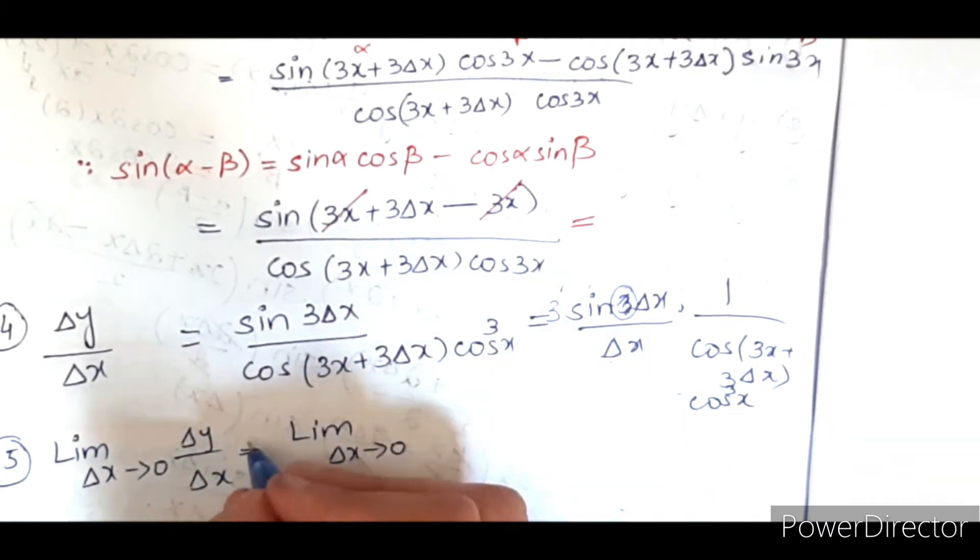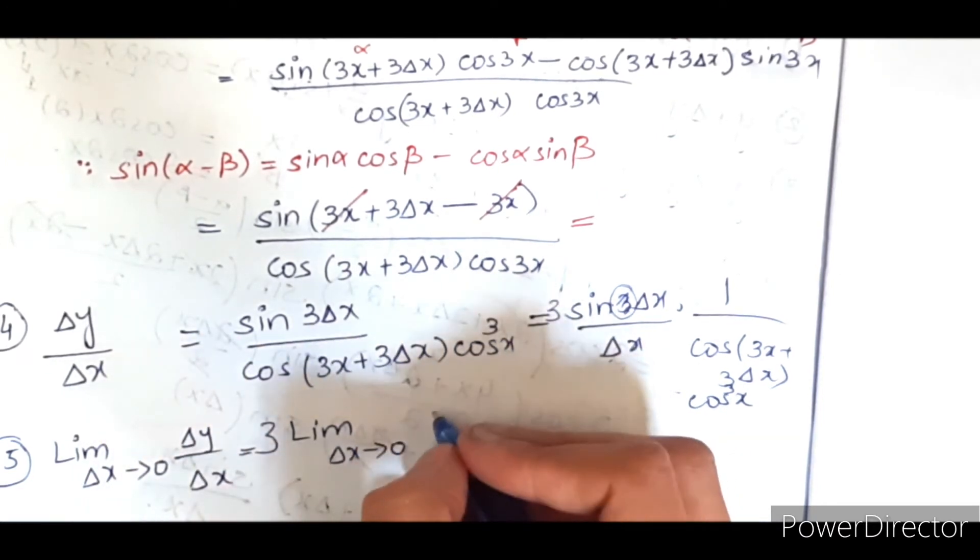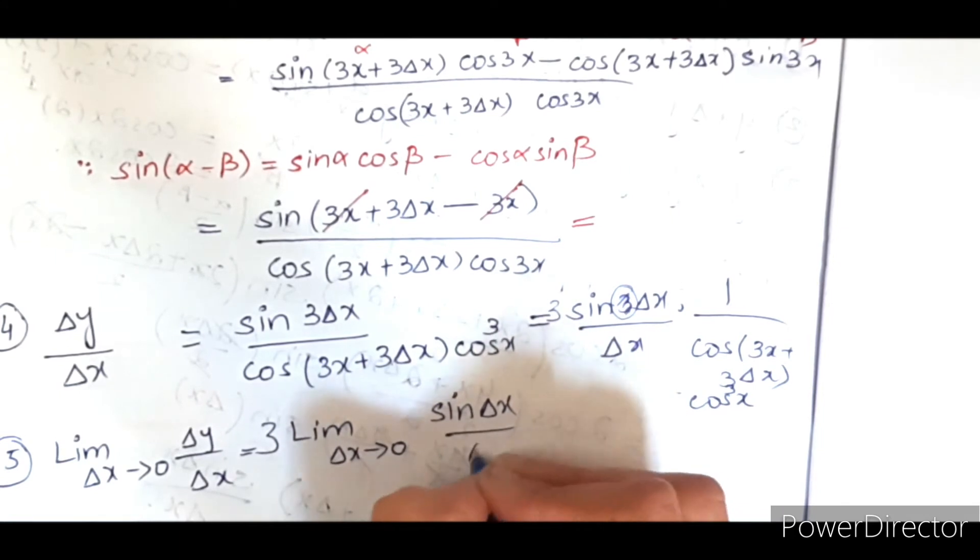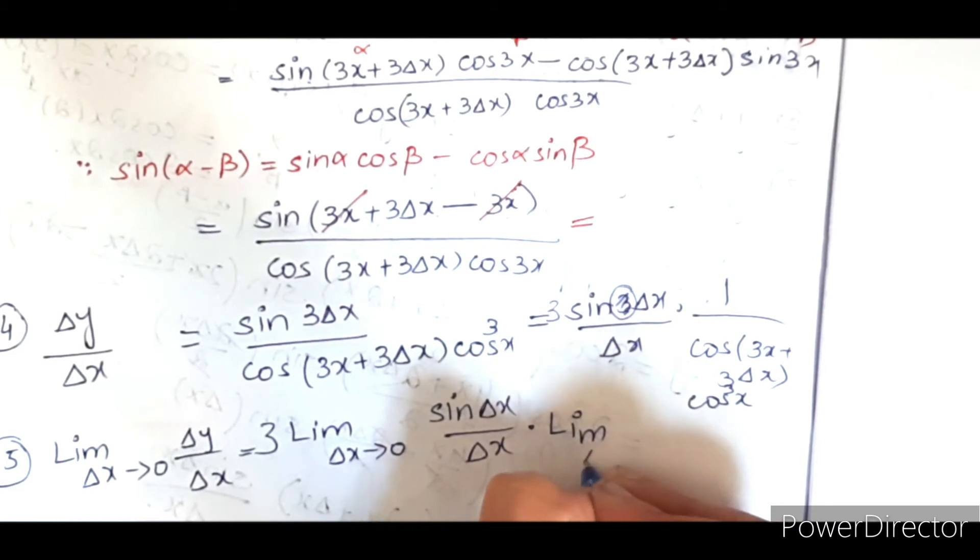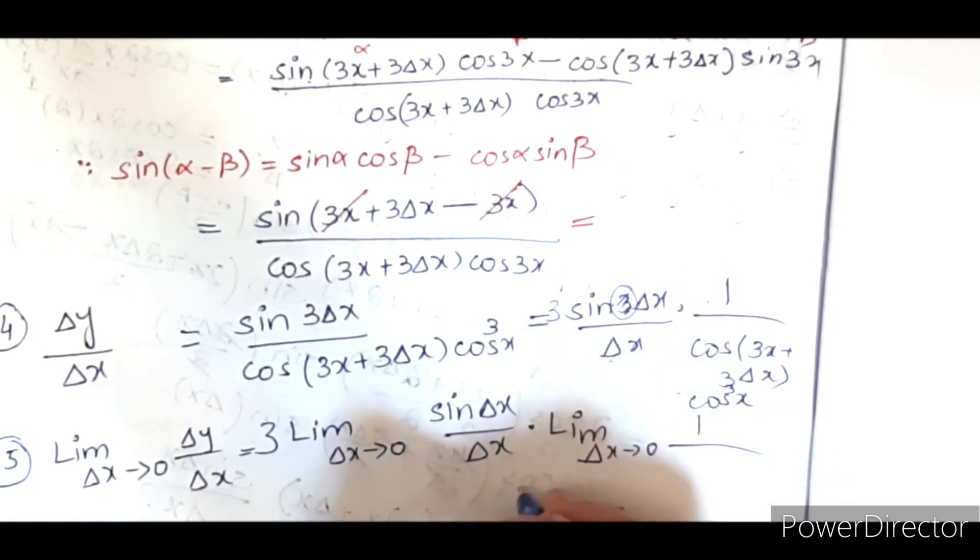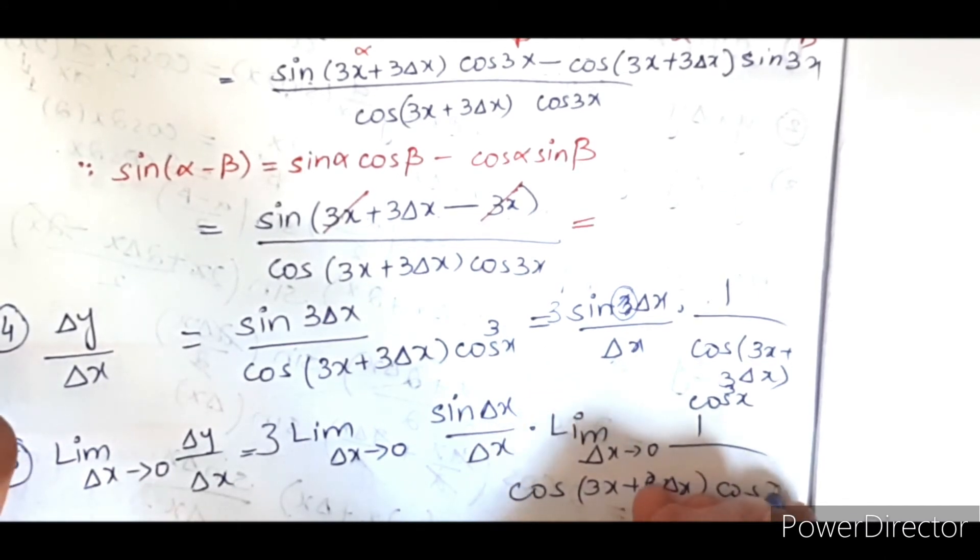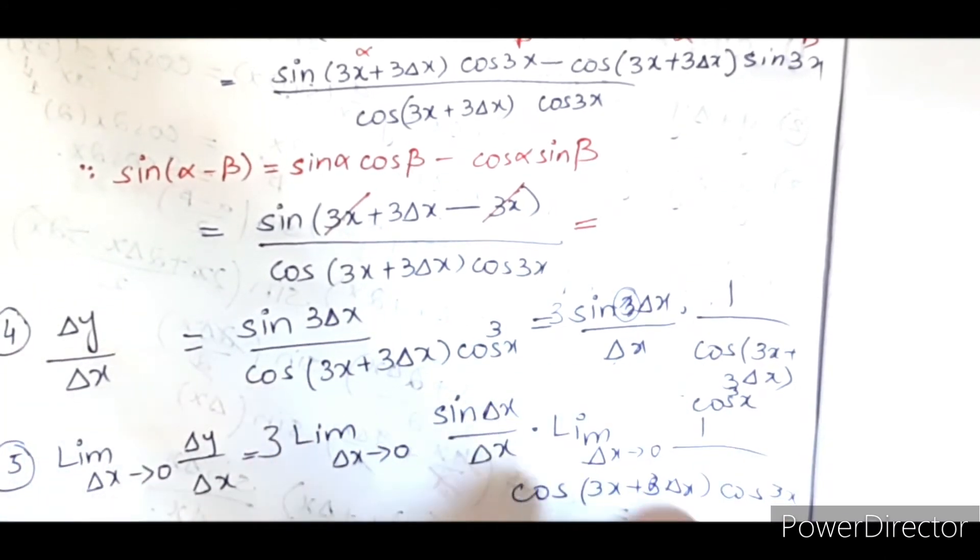So it will be: 3 in the start because it is a constant value, times limit del x approaches to 0 of sin del x divided by del x, times limit del x approaches to 0 of 1 over cos 3x plus 3 del x into cos 3x.